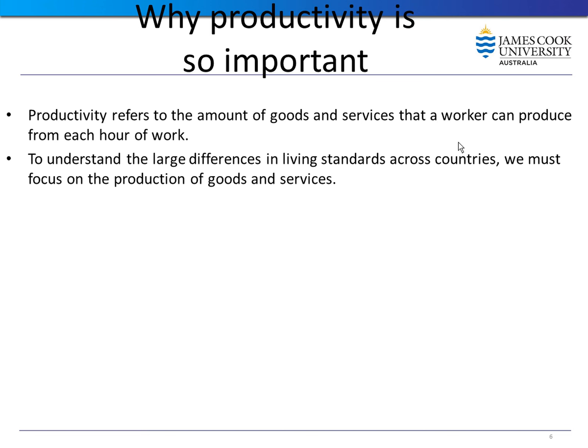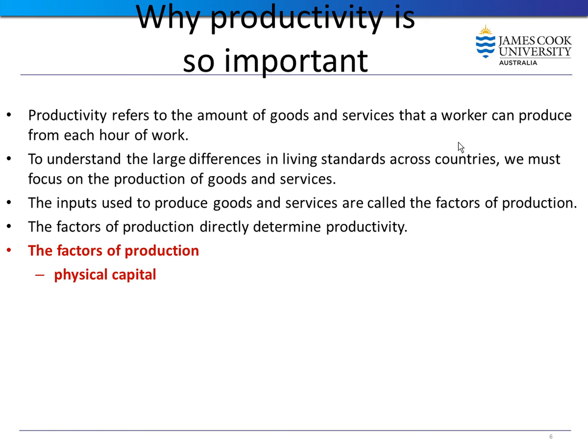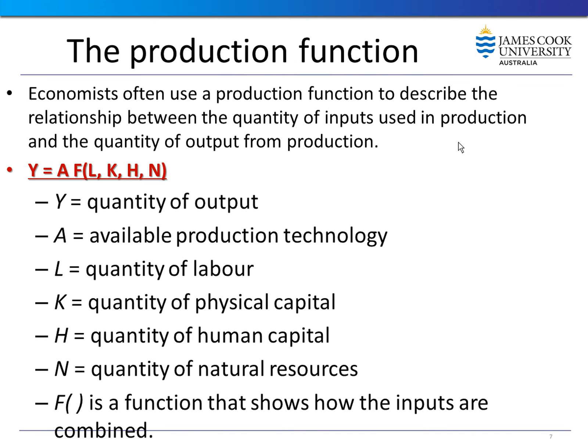To produce we need inputs, which we call factors of production. These factors directly determine productivity. Factors of production include physical capital such as machines and trucks, human capital embodied in workers such as skills and education, natural resources including land, renewable resources, and non-renewable resources like iron ore, and technological knowledge — new ways of producing goods more efficiently.